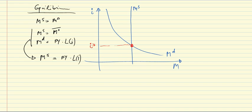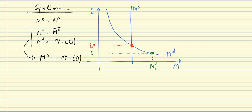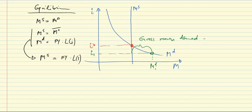Let's do a thought experiment about how this equilibrium is attained. Assume i-star is the equilibrium interest rate, but today the interest rate is at a higher level, i1. At interest rate i1, money demand is higher than the money supply — we have excess money demand. If we have excess money demand, the money market is in disequilibrium, and equivalently the bond market is also in disequilibrium. Excess money demand must imply excess bond supply.